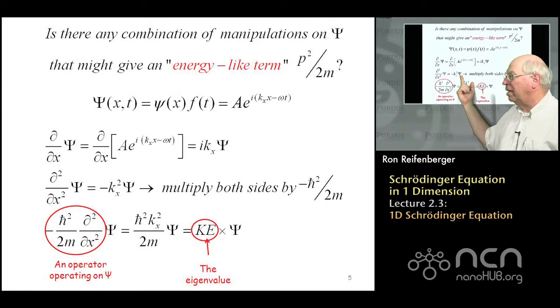So again, this is an eigenvalue type problem, because it says here's an operator, second derivative with respect to x, operating on the wave function psi. I get something back, in this case the something is minus kx squared, times the wave function psi back itself.